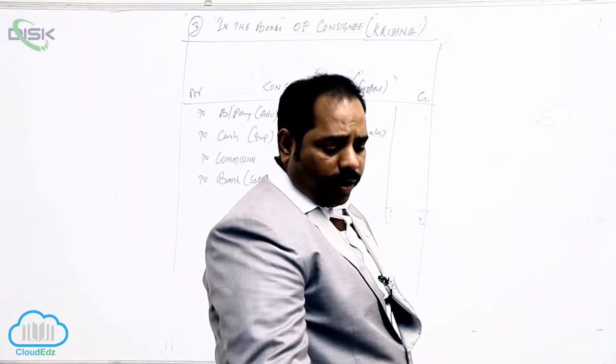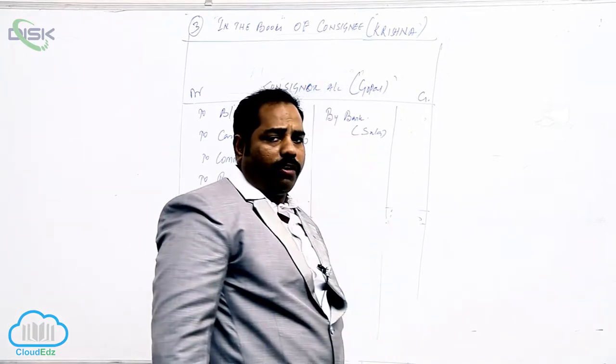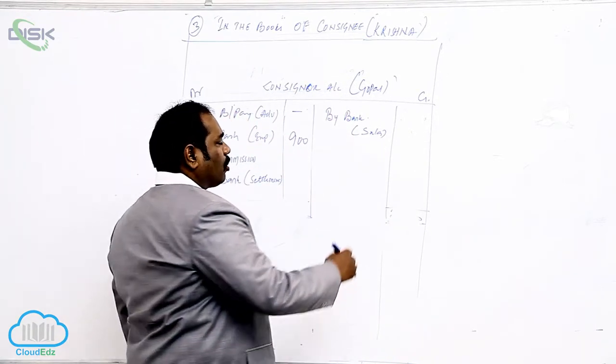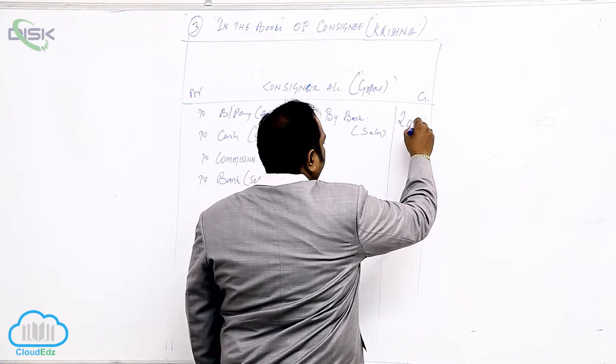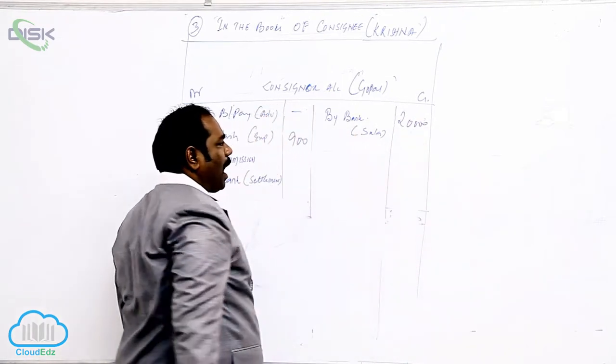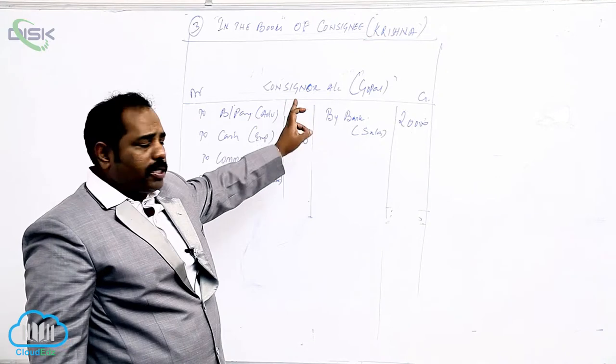Krishna sold the entire stock for 20,000 and charged a commission of 5%. So when he sells the goods, all the stock was sold for cash, so we write: bank account debit to consigner. Because consigner becomes creditor.